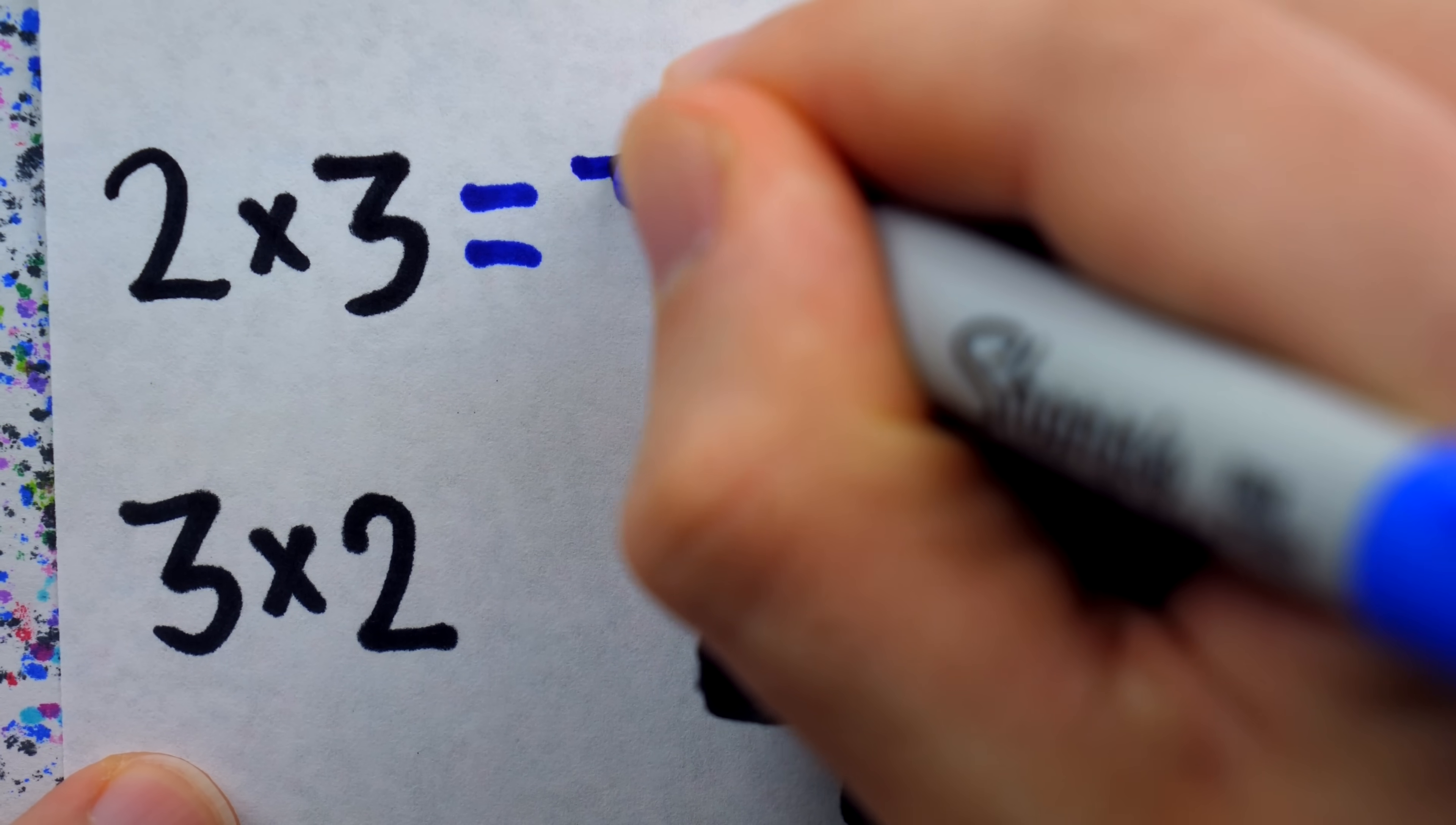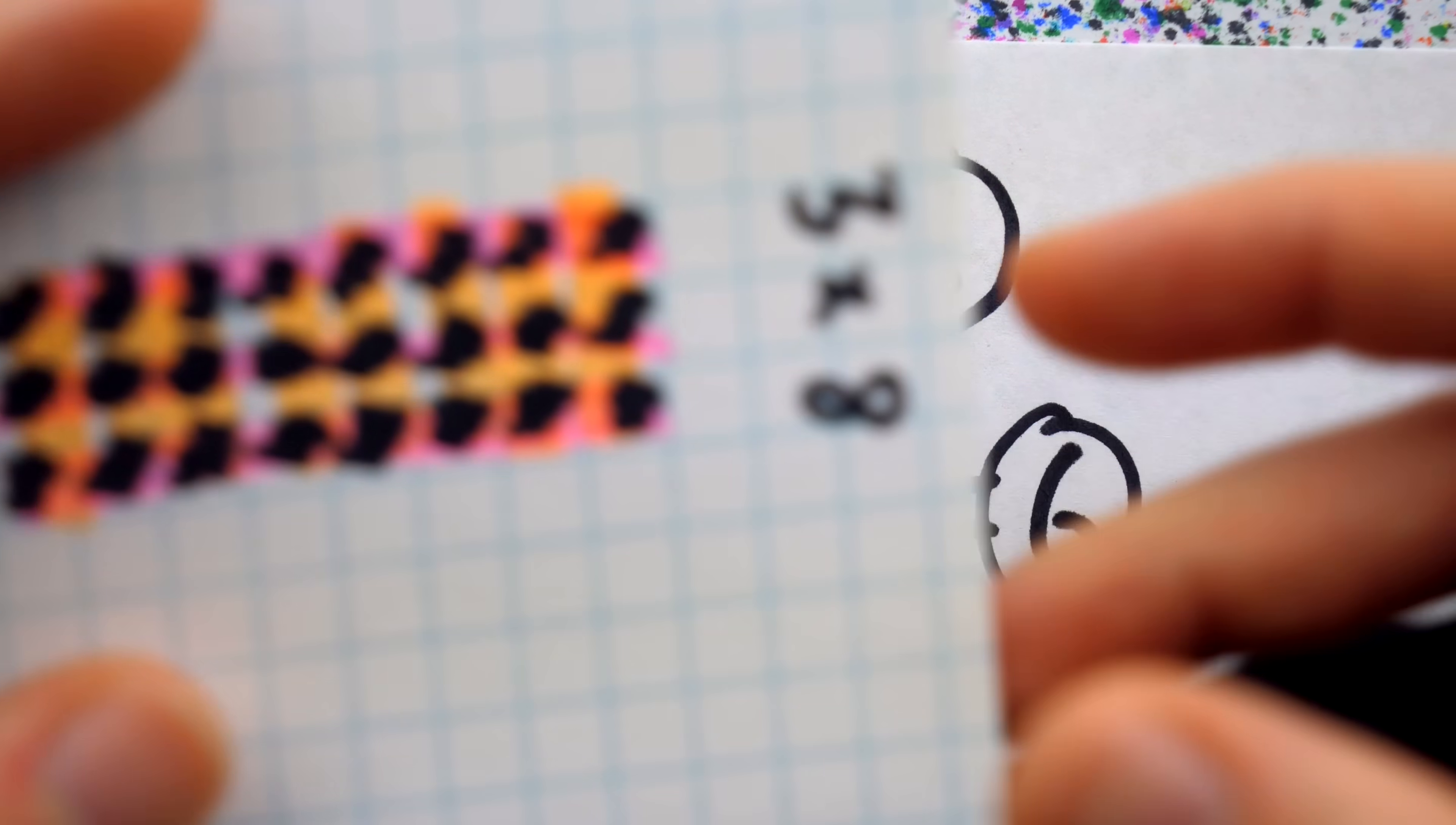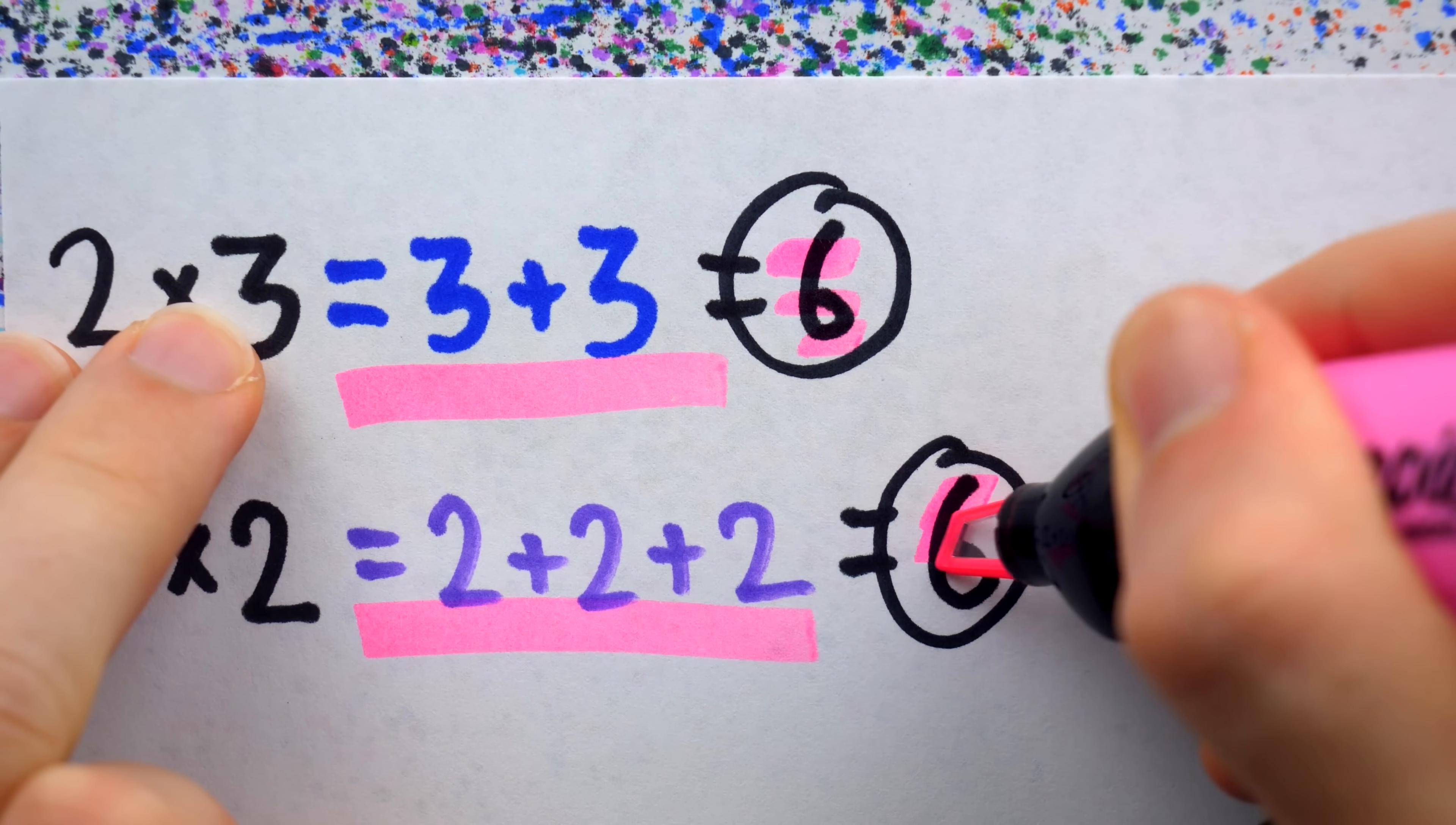two times three is three plus three. Three times two is two plus two plus two. What do you notice about these two numbers? Well, they happen to be equal. Is this always the case? And then you can explore reasons why it may or may not be. You can give students the opportunity to discover and attempt explaining this important property. But to do this at all, you need to distinguish between the two orders in the first place. Not because they're totally different in every way, but because they are different in some way, but they happen to be the same in one very important way.